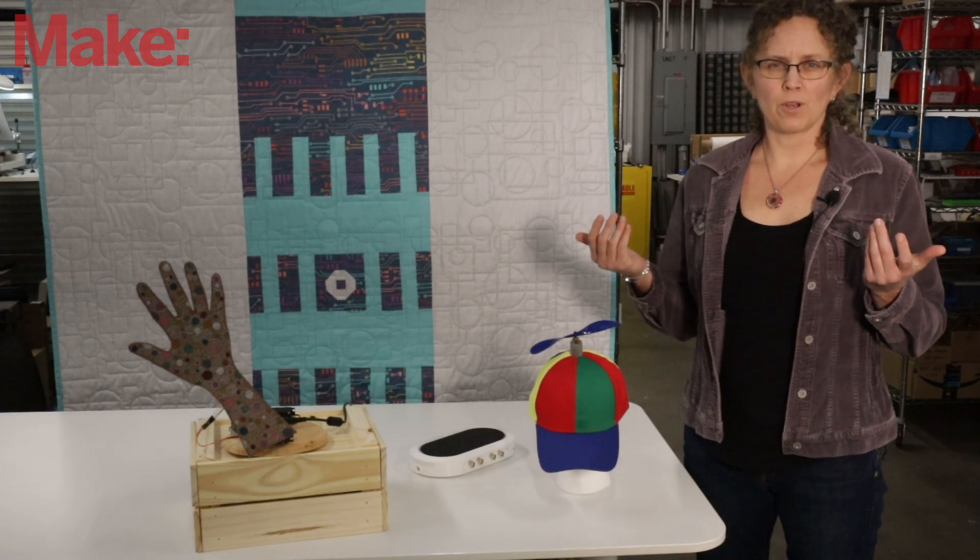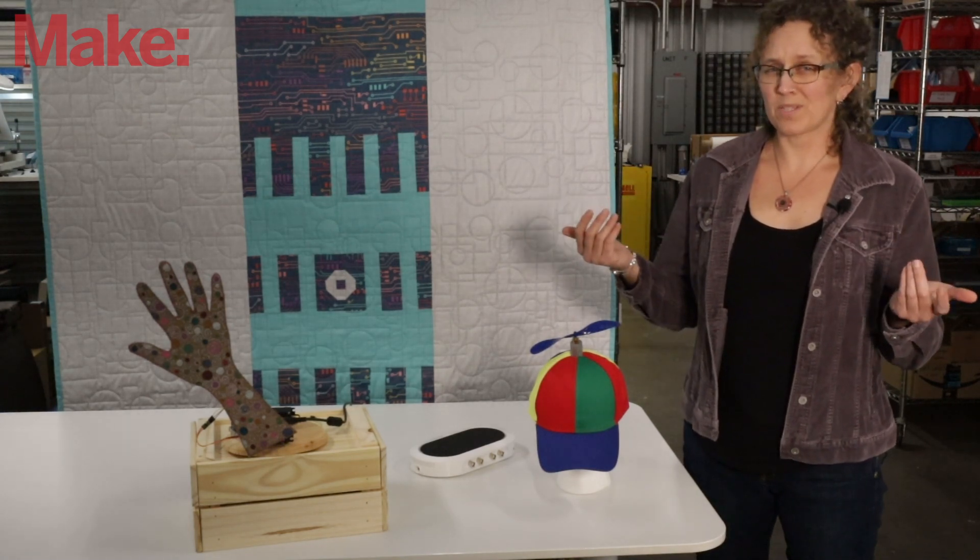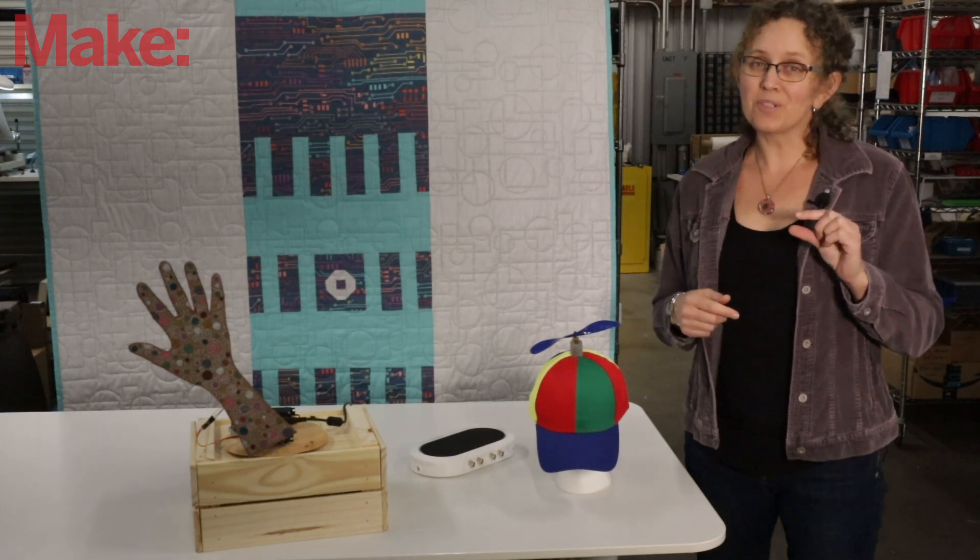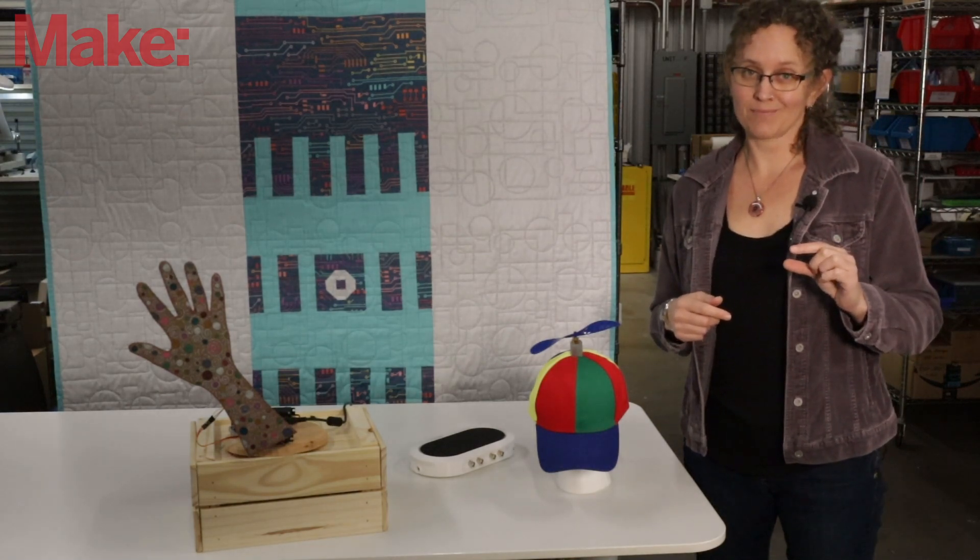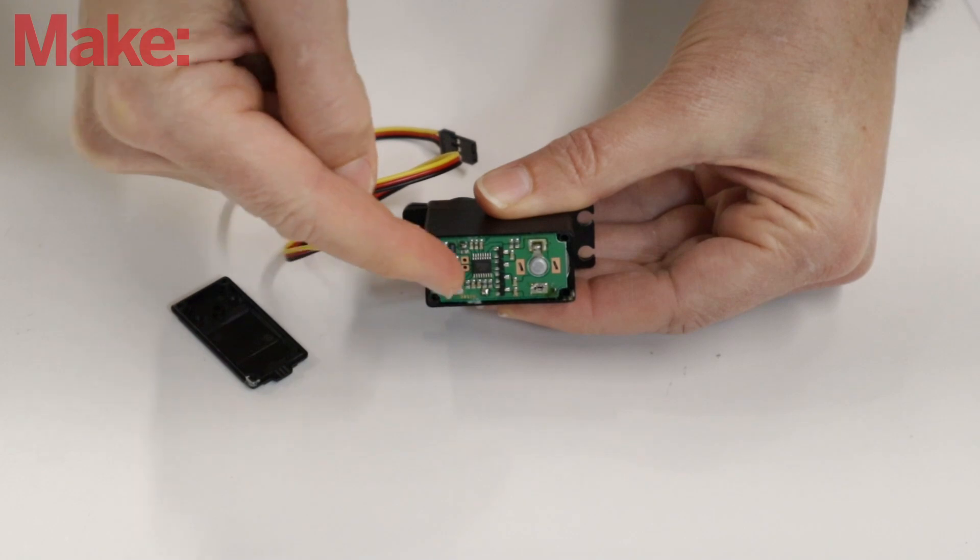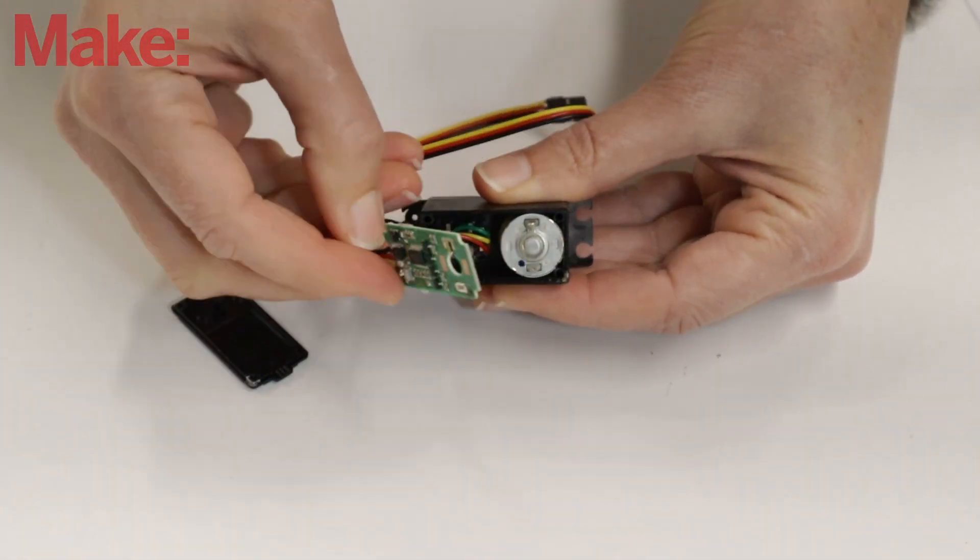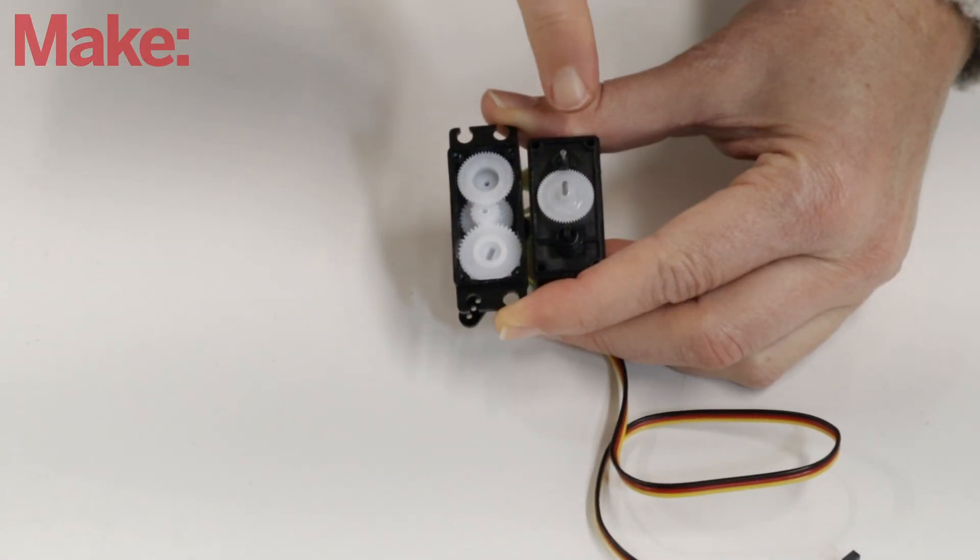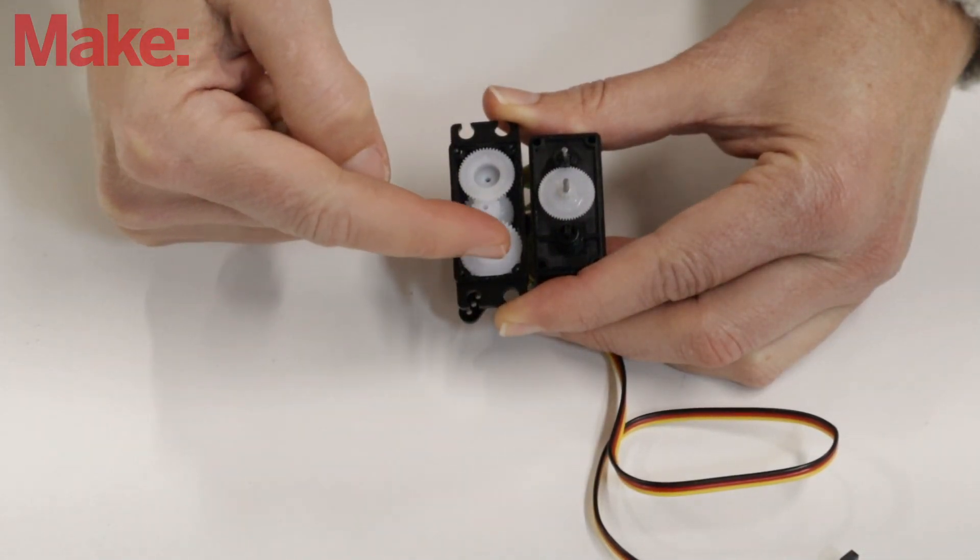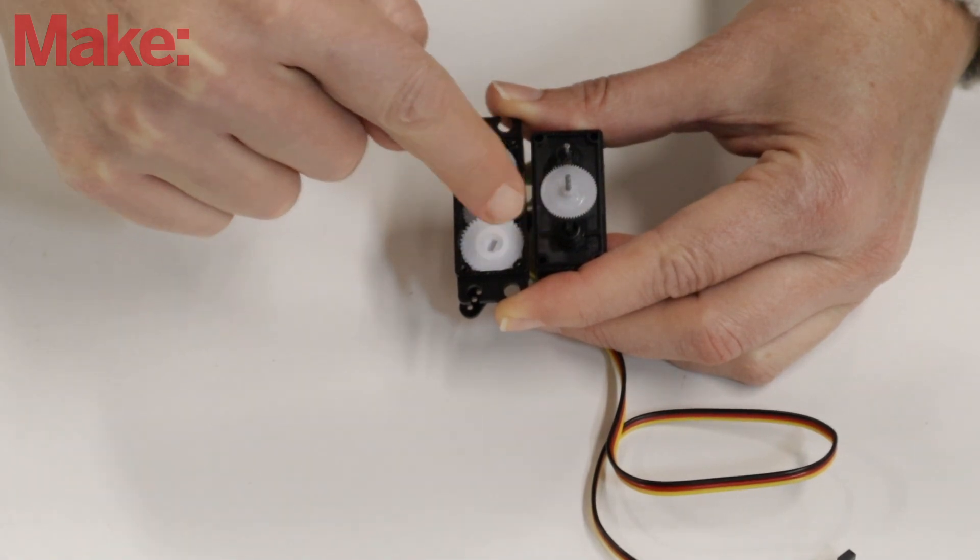But how does a servo know what pulse width corresponds to what position? Servos are actually pretty cool little compact control systems. There's a controller board which reads the PWM input and drives a small motor. The motor is attached to the output shaft of the servo through a system of gears, and the output shaft is attached to a rotary potentiometer.